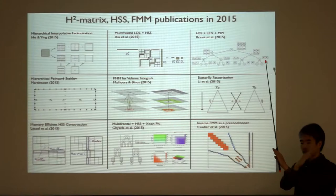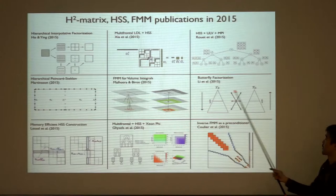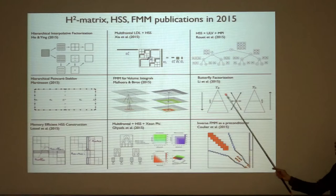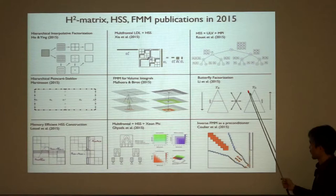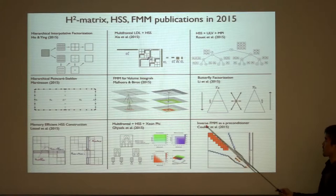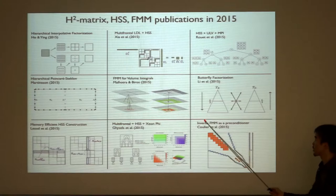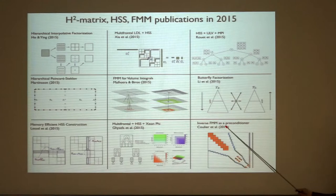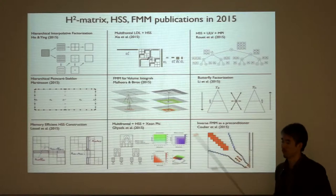People familiar with FFT know the butterfly communication pattern — connections going top to bottom at half distances each time. This butterfly factorization has O(n log n) complexity because there are log n levels in the tree. Also, inverse FMM was briefly mentioned: FMM can do matrix-vector multiplication, and now you can do the inverse operation, using it as a direct solver. With lower accuracy it becomes a good preconditioner, with nice illustrations showing how fill-in is reduced during the inversion.